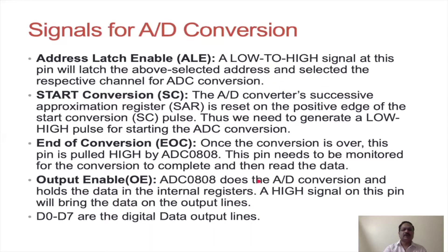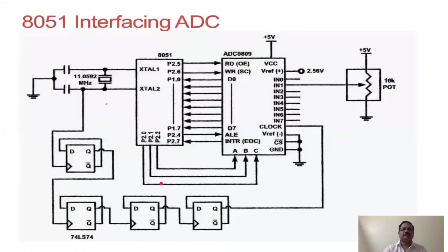Here is a description of the various signals: Address Latch Enable should go low to high, then one channel is selected based on ABC inputs. The Start of Conversion pulse initiates the conversion. End of Conversion and Output Enable signals are also present. Now let us discuss how the ADC is interfaced with the 8051 microcontroller.